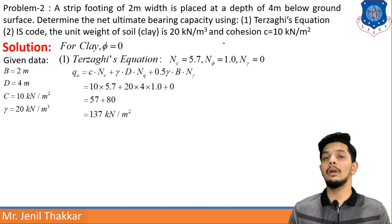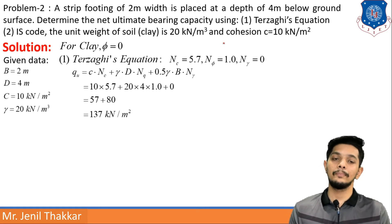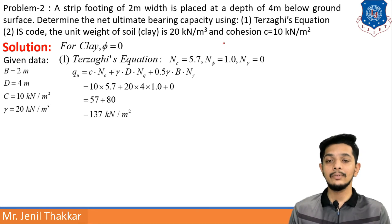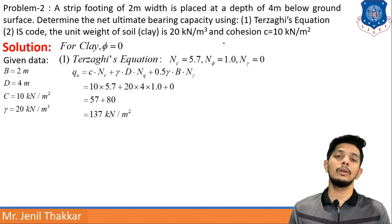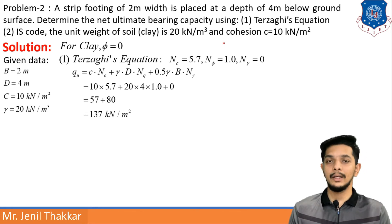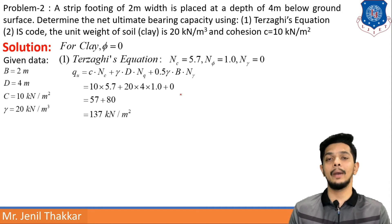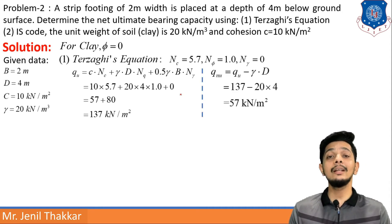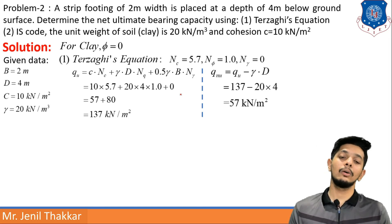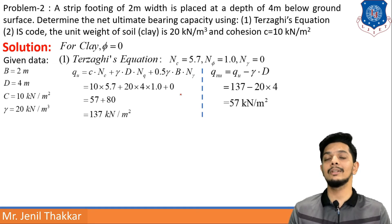For φ = 0: Nc = 5.7, Nq = 1.0, Nγ = 0 using Terzaghi's values. Applying Terzaghi's formula: qu = c·Nc + γ·D·Nq + 0.5·γ·B·Nγ, we get qu = 137 kN/m². The net ultimate bearing capacity is q_nu = qu − γ·D = 137 − 20×4 = 57 kN/m².